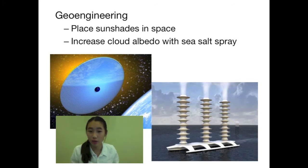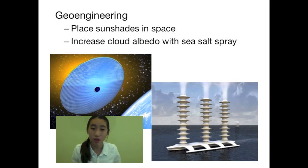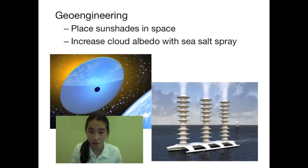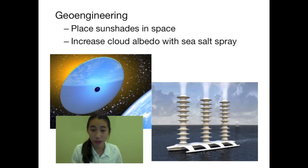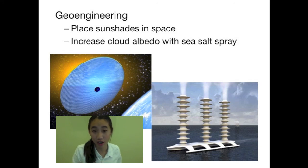Another geoengineering solution is to increase cloud albedo. Clouds play a big role in determining the Earth's albedo — thicker and larger clouds are more helpful in reflecting more solar radiation back, meaning they have a higher albedo. To increase cloud albedo, the idea is to use SeaSaw Spray, which would increase the concentration of water droplets in the clouds and help reflect more energy back.